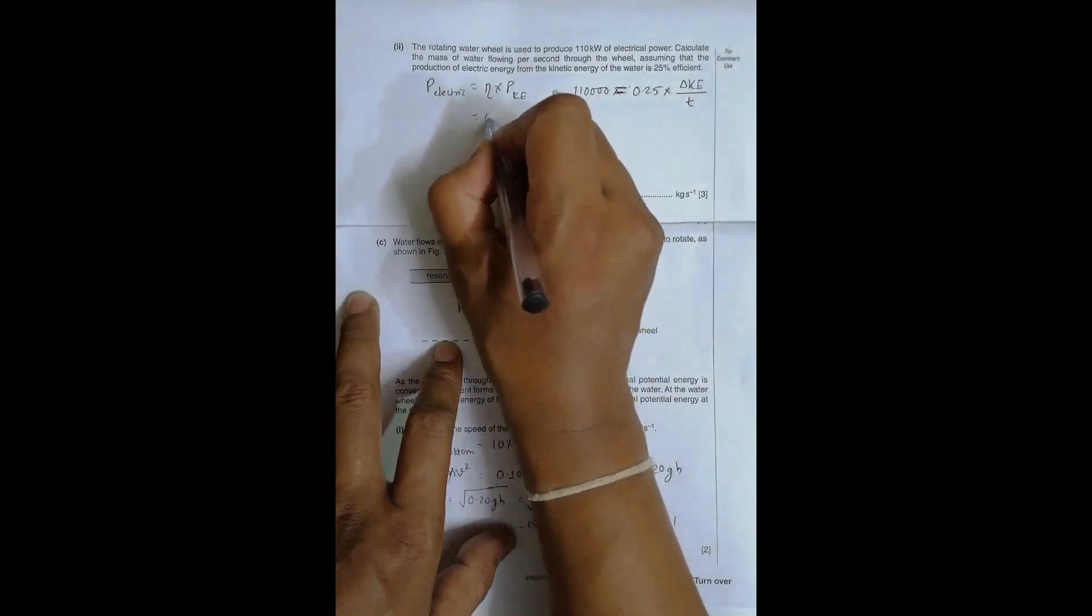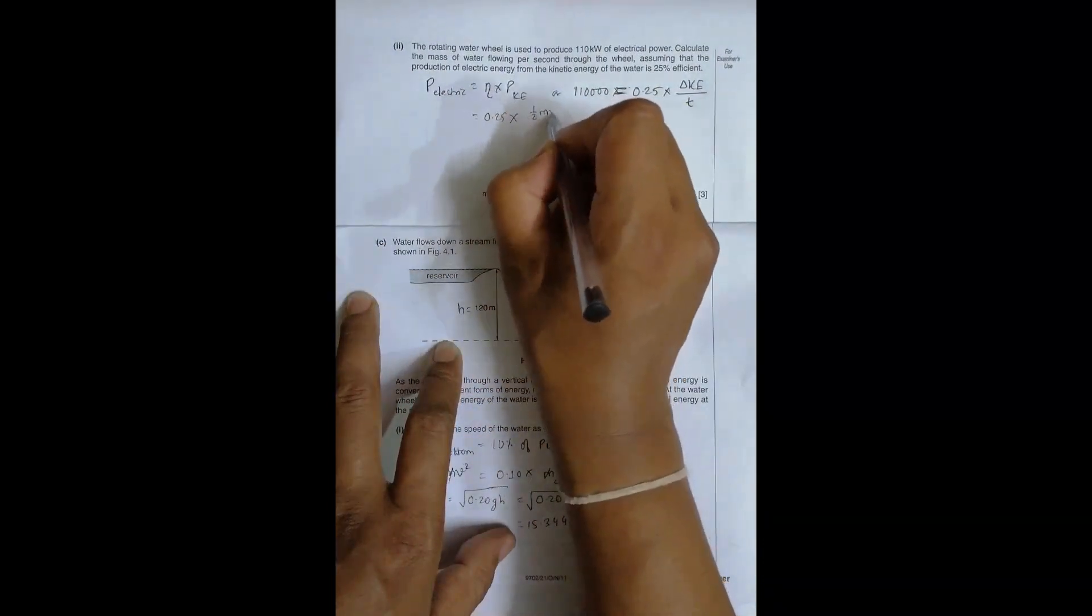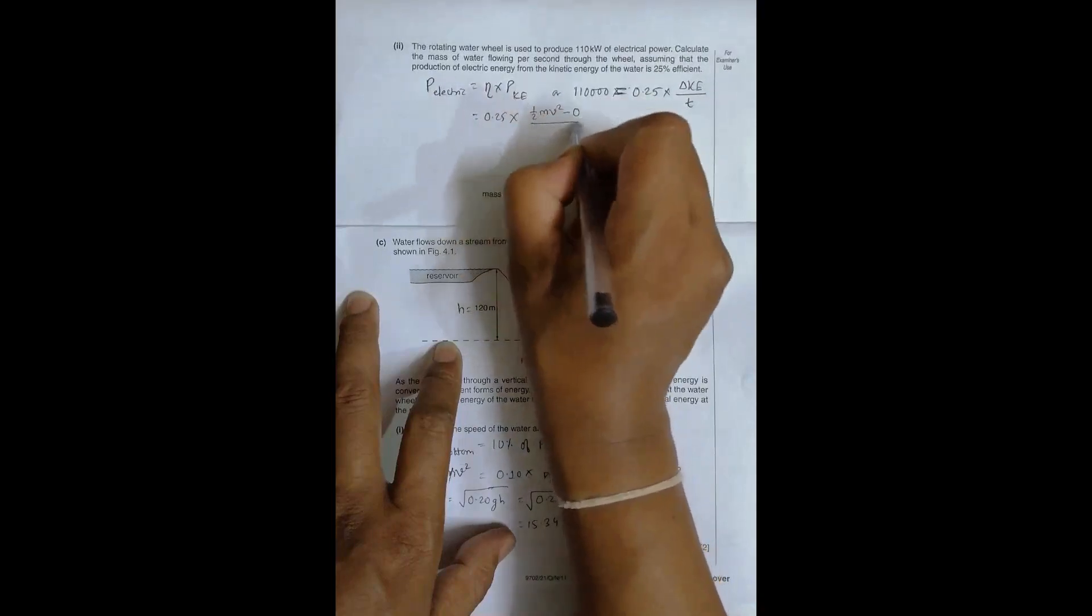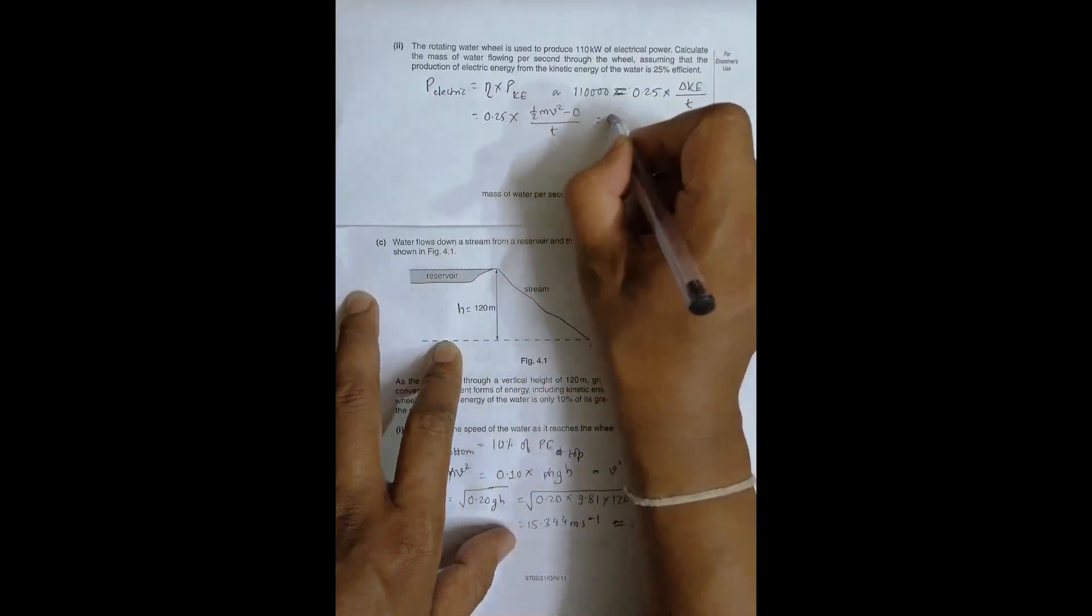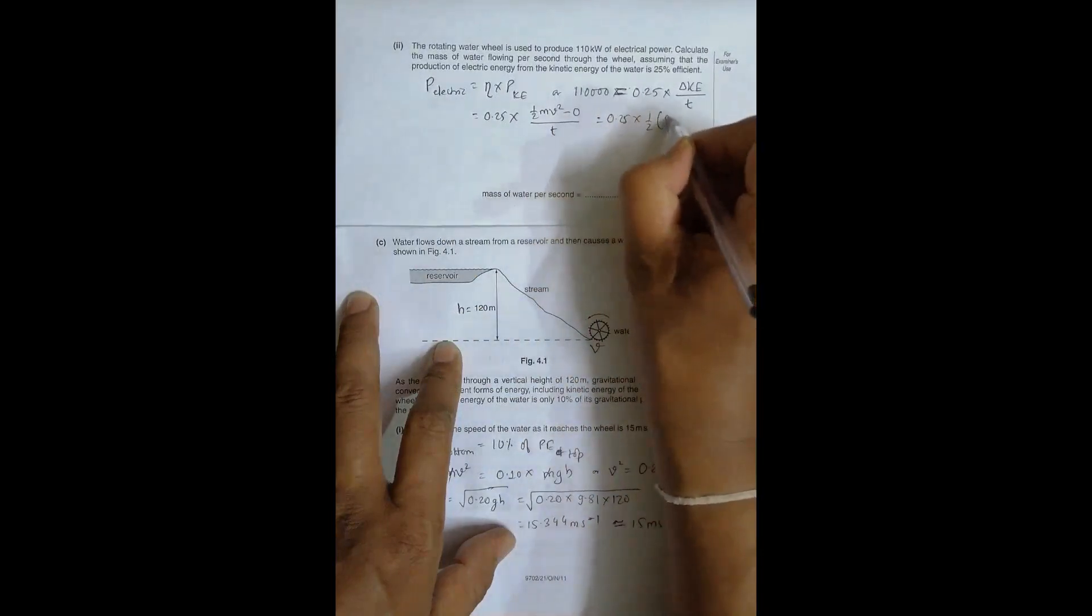simply 0.25 into 1 by 2 M V square minus 0 by time. And that is equal to 0.25 into 1 by 2 M by T, and then V square.